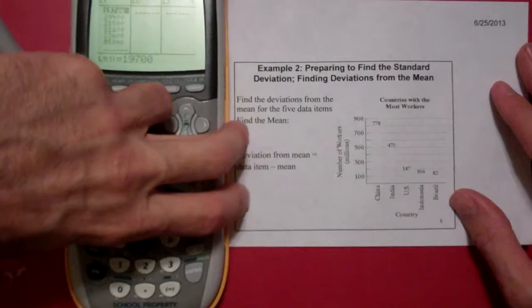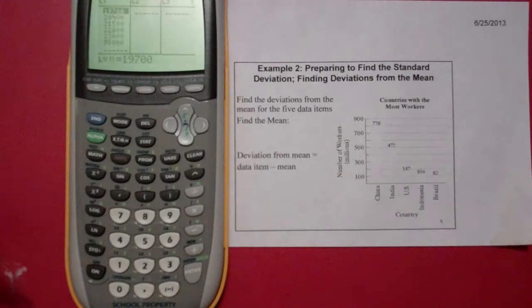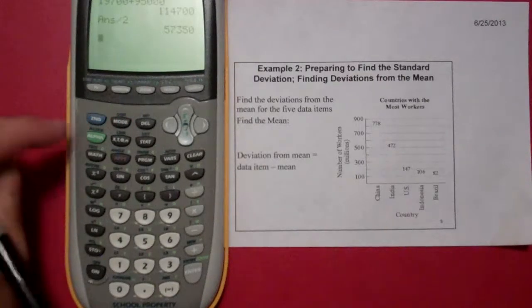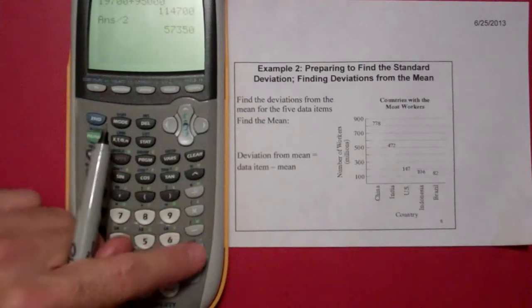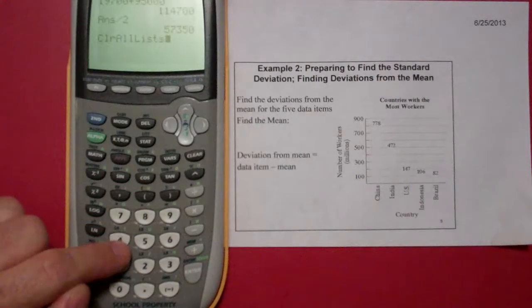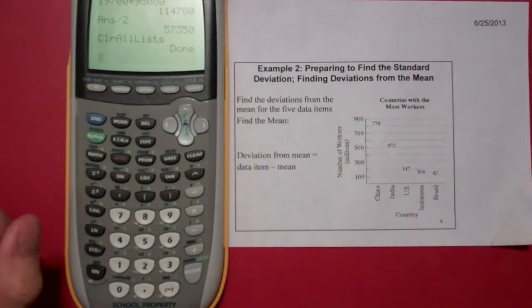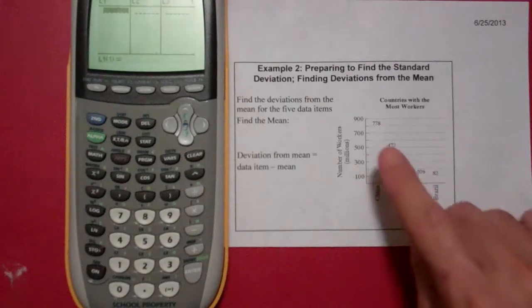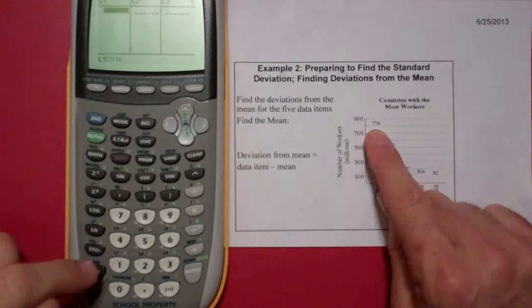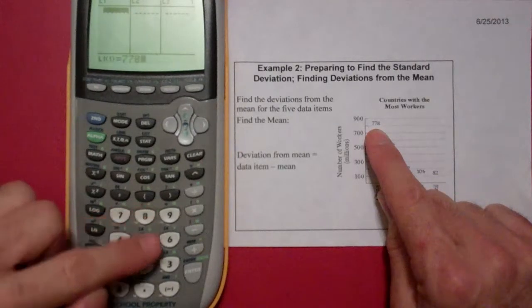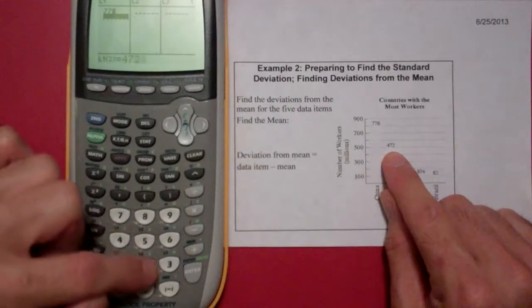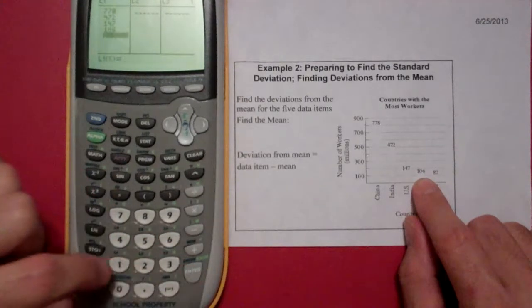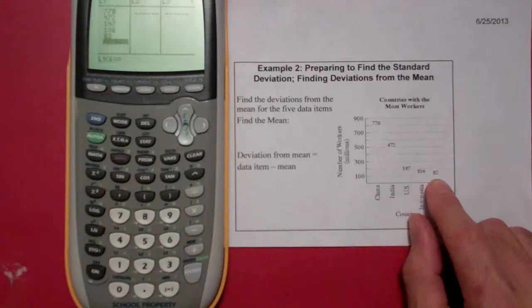I'm going to kind of put it in the center a little bit. And so with my graphing calculator, I can see I have some data that's already in there. So I'm going to go to the home screen, second quit, and then I'm going to use second plus, which is the memory. And we use four for clear all lists and just hit enter. And now I'm going to hit the stat and enter again so that I can go straight into the list. My first value is 778, enter. My next value is 472, enter. My next value is 147, enter. The next value is 146, enter. And the last value is 82, enter.